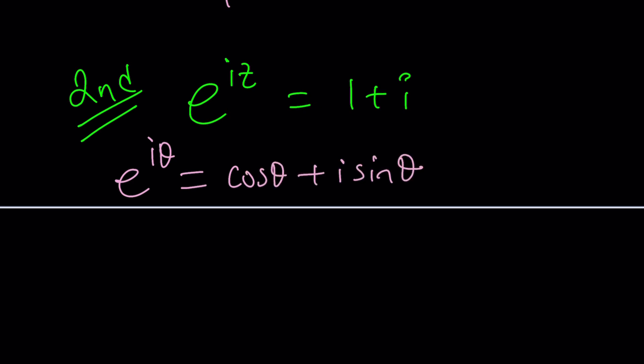e to the i theta is cosine theta plus i sine theta. So that looks like a really cool way to approach this problem, don't you think? Because this gives me immediately the result in standard form. Take a look at this. Beautiful, right?